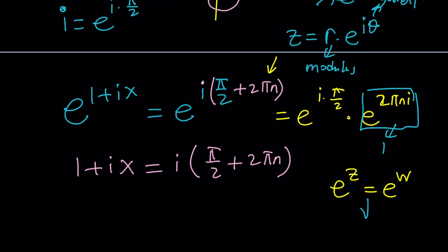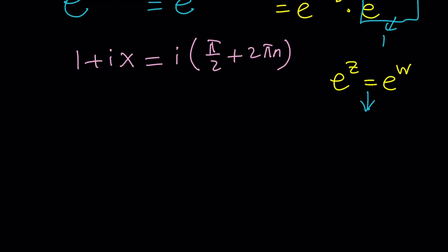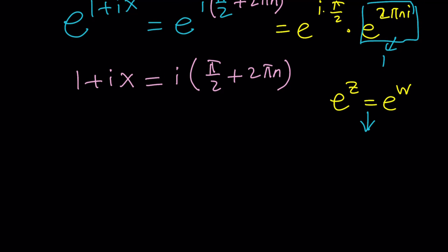Anyways, from this equation, let's go ahead and try to solve for x. To be able to do that, we're going to first subtract 1. If you subtract 1 from both sides, you're going to get this. And then, of course, to solve for x, you can divide by i.